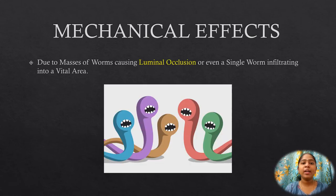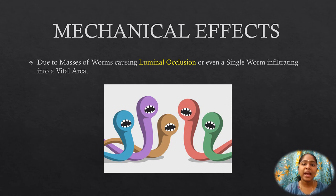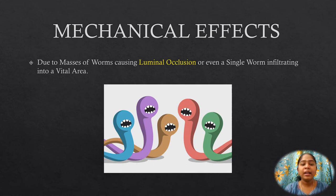Mechanical effects are the most important manifestations of Ascariasis, caused by masses of worms producing luminal occlusion, or even a single worm infiltrating into a vital area. The adult worms live in the upper part of the small intestine, maintaining position by muscle tone spanning the lumen. They may stimulate reflex peristalsis causing recurrent and often severe colic pain. The worms may clump together, filling the lumen and leading to volvulus, intussusception, intestinal obstruction, or intestinal perforation.